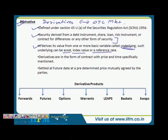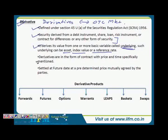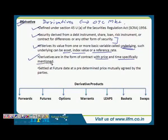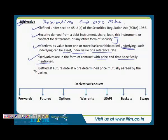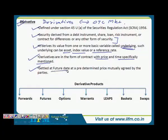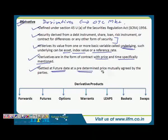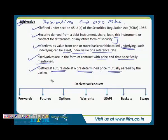Derivatives are in the form of a contract — very importantly, they are a type of contract with price and time specifically mentioned in the contract. They are settled at a future date at a predetermined price mutually agreed by the parties.